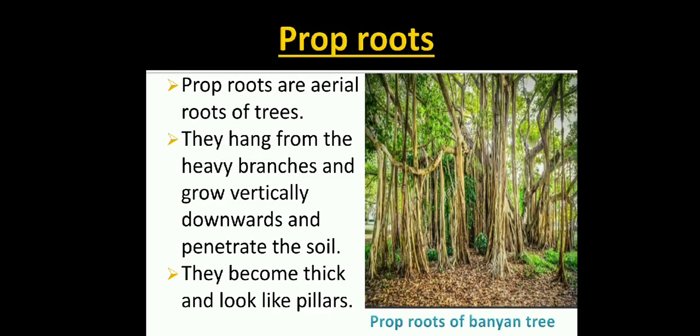Prop roots. Prop roots are aerial roots of trees. They hang from the heavy branches and grow vertically downwards and penetrate the soil. They become thick and look like pillars. They provide support to the spreading branches that fan out from the trunk of the tree. Sometimes they even replace the trunk or main stem. Here is an example of prop root of a banyan tree.